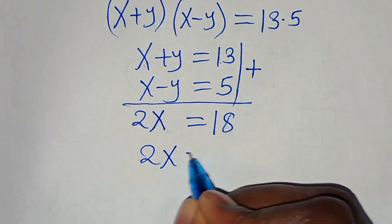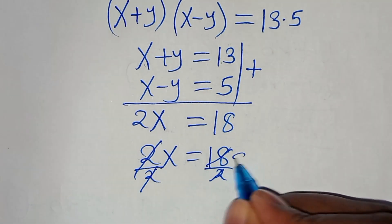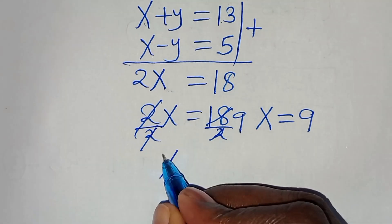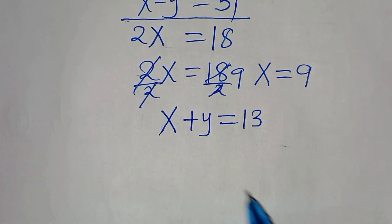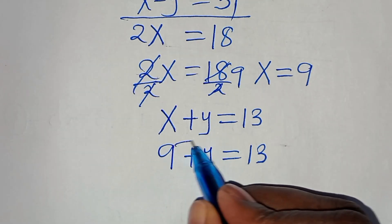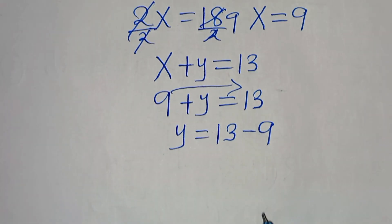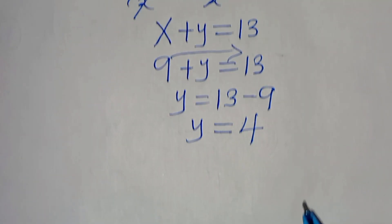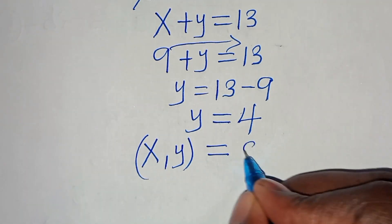We have 2x = 18, so dividing both sides by 2, x = 9. To solve for y, using x + y = 13, we substitute x = 9: 9 + y = 13, so y = 13 minus 9, which means y = 4. So the second set of solutions is x, y = (9, 4).